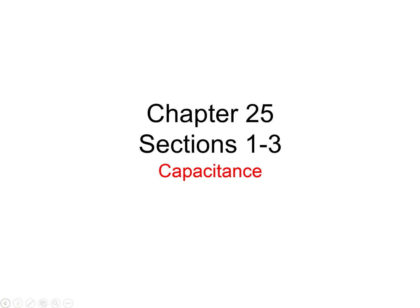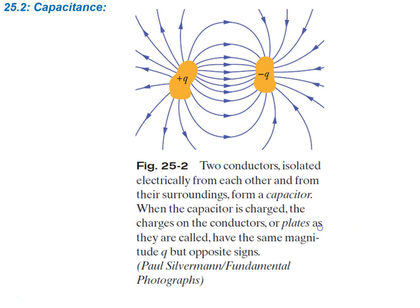We're starting chapter 25. We're going to cover the first couple sections of the chapter on capacitance. So two conductors, shown here and here, isolated electrically from each other and from their surroundings, form a capacitor. They're not physically touching and they're isolated from their surroundings as well. So two conductors form a capacitor.